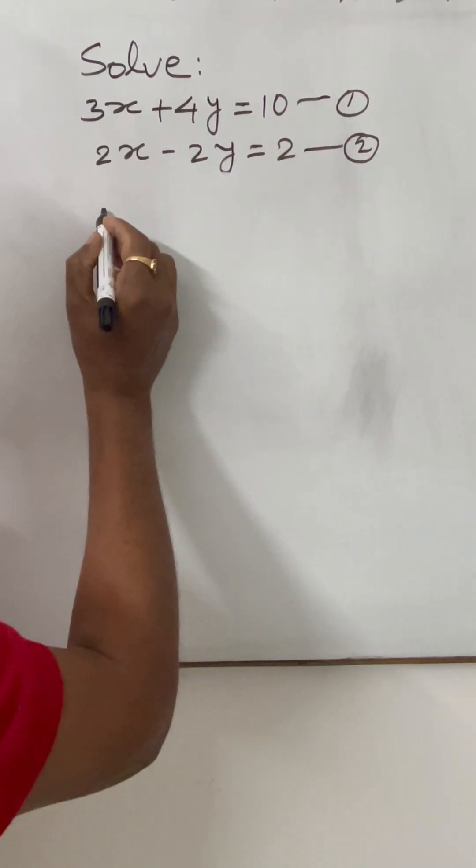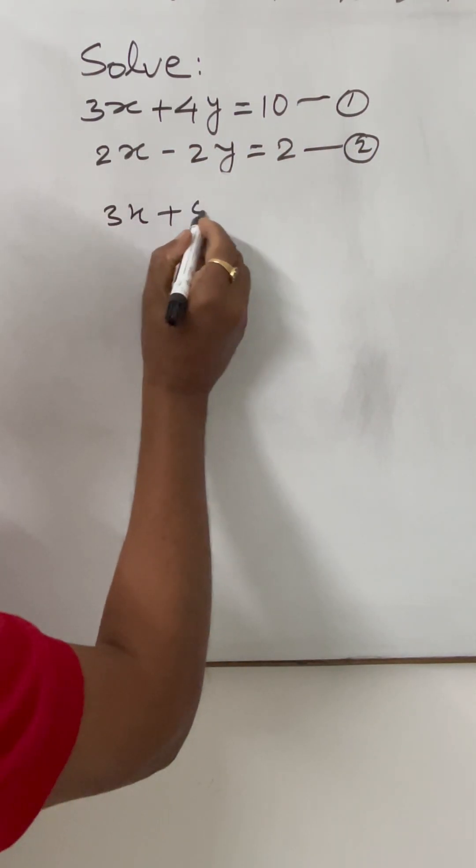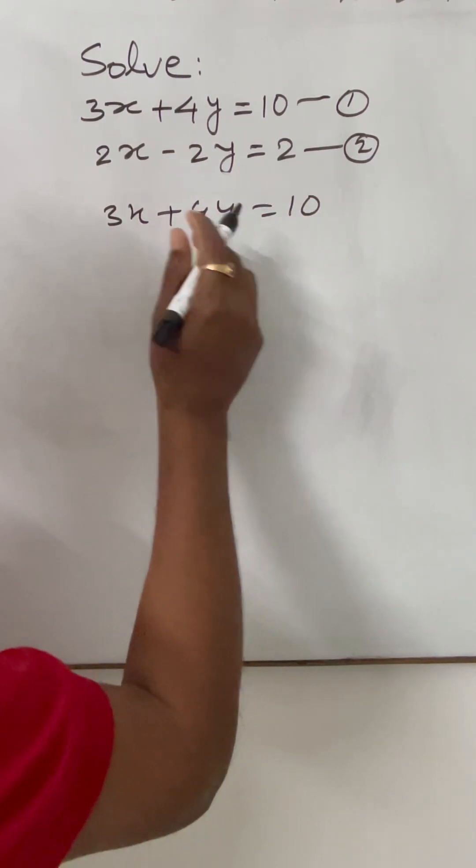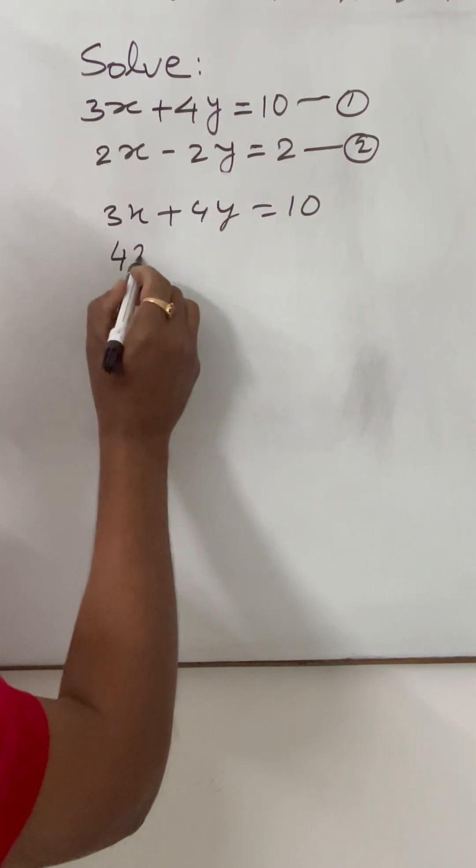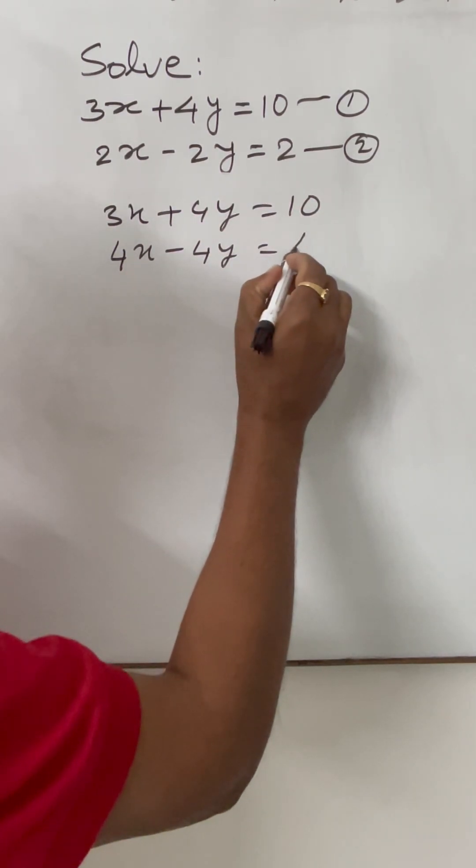Equation number 1 is 3x plus 4y is equal to 10. When we multiply equation number 2 with 2, we will get 4x minus 4y is equal to 4.